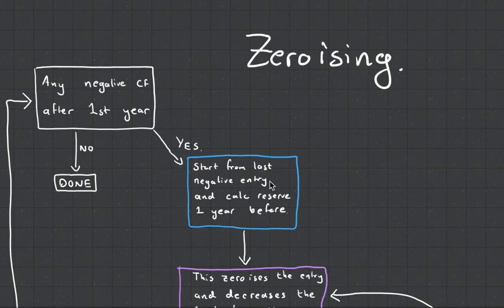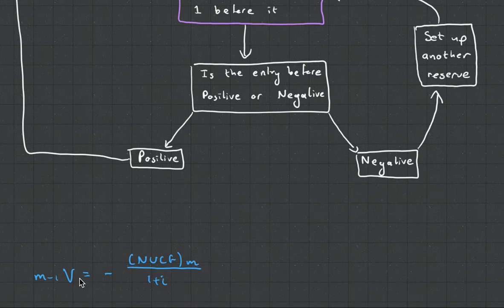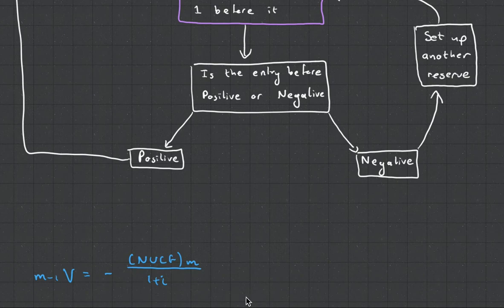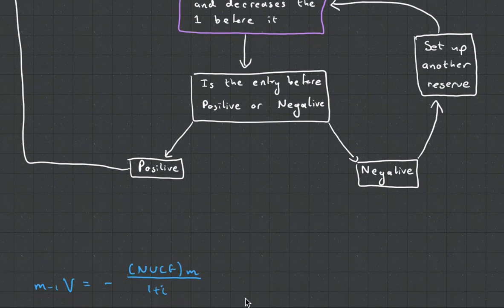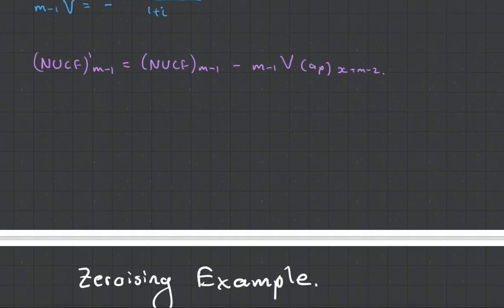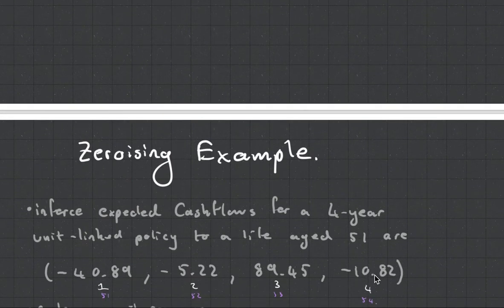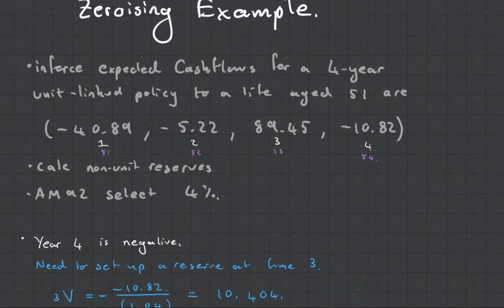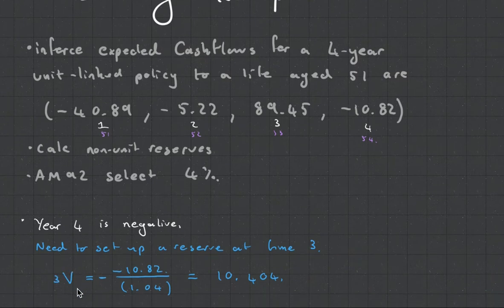So start from the last negative entry and calculate the reserve one year before. And that's where this formula here comes in. So it's the reserve one year before is going to be equal to the cash flow, make it negative divided by the interest. So we set up this reserve. For here, negative 10.82, we set up this reserve at time 3. 3V is equal to that, divided, you can see it's a little bit smaller because of the interest.